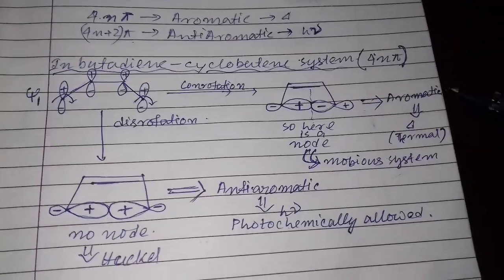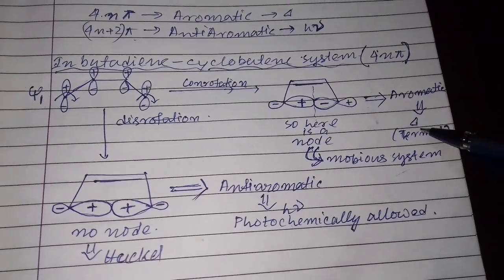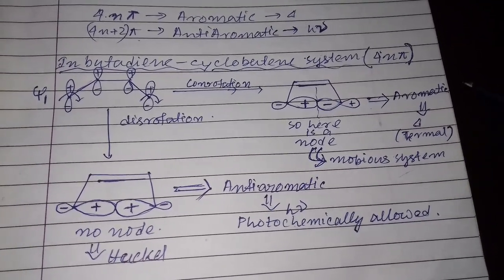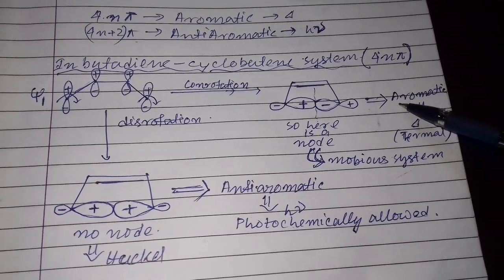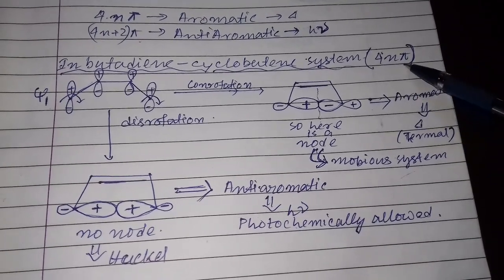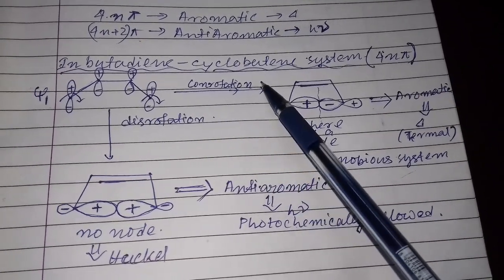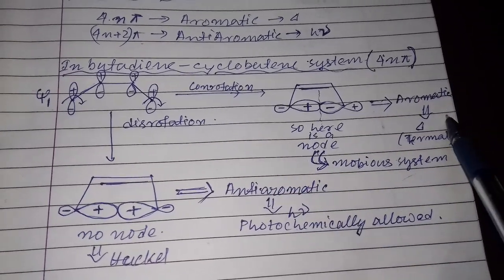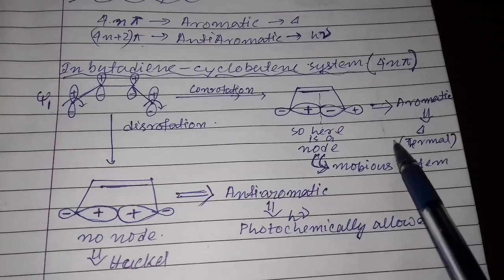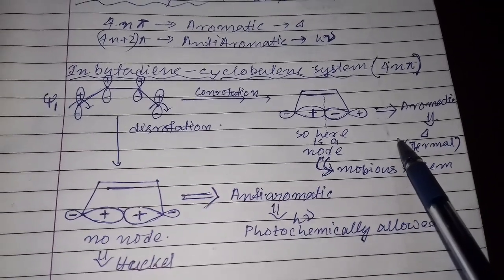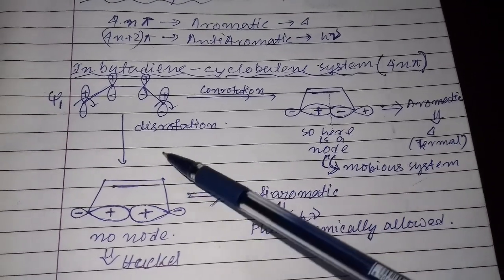According to the Möbius system, for the 4n pi electronic system the product is aromatic and thermally allowed. So the conrotatory process for the 4n pi electronic system is thermally allowed.